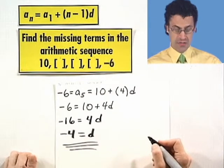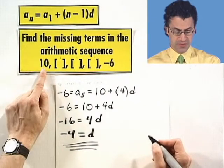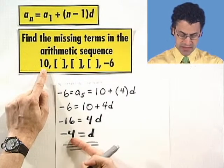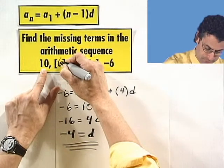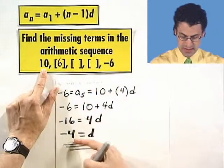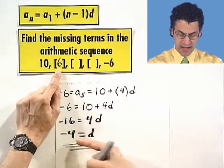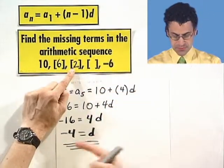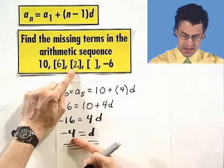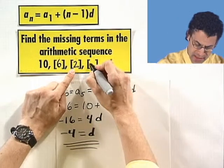So now we can actually predict the terms. If I start with 10, I just subtract 4, so 10 plus negative 4, and I see 6. If I now subtract 4 again, I see 2. If I now subtract that common difference 4 again, I see negative 2.